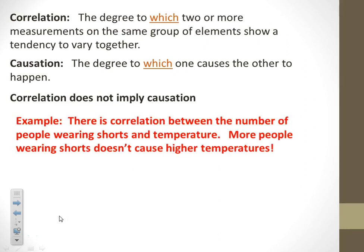For example, there is a correlation between the number of people wearing shorts and the temperature outside. But just because more people are wearing shorts, it doesn't cause the temperature to rise. The causation relationship there is actually the opposite. If it's warmer outside, more people wear shorts.